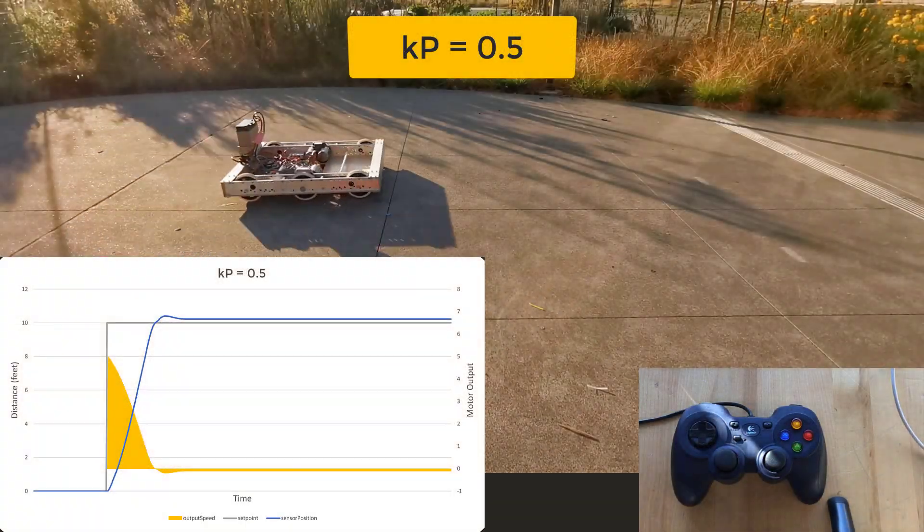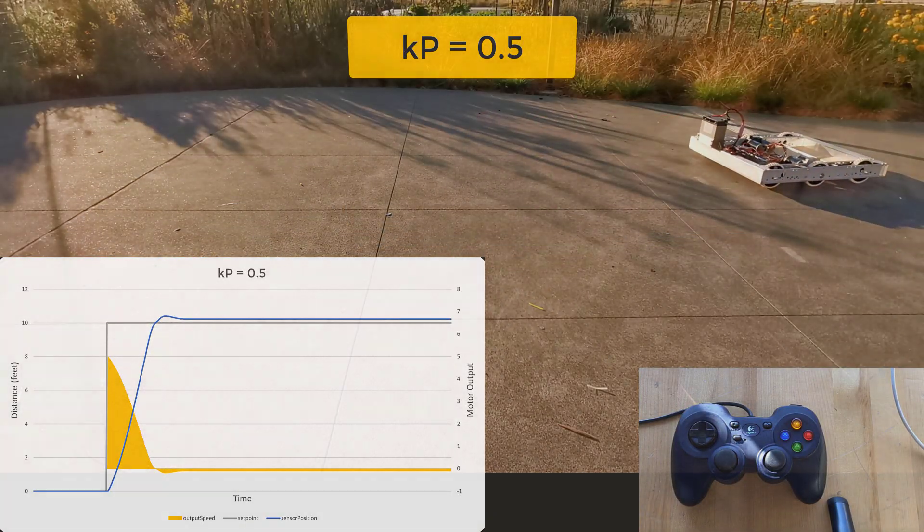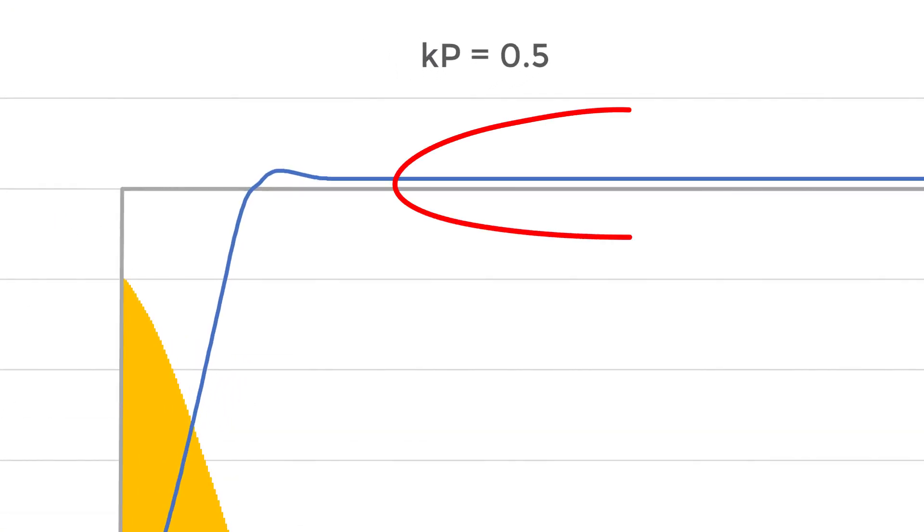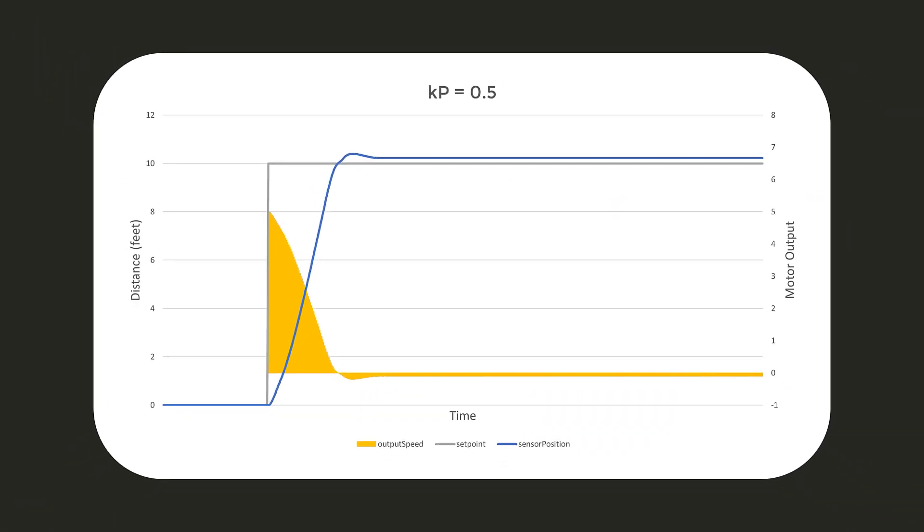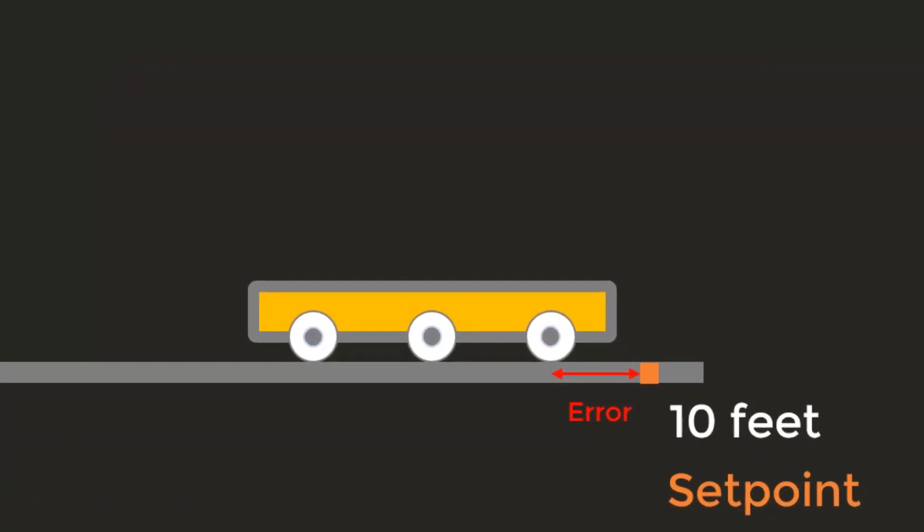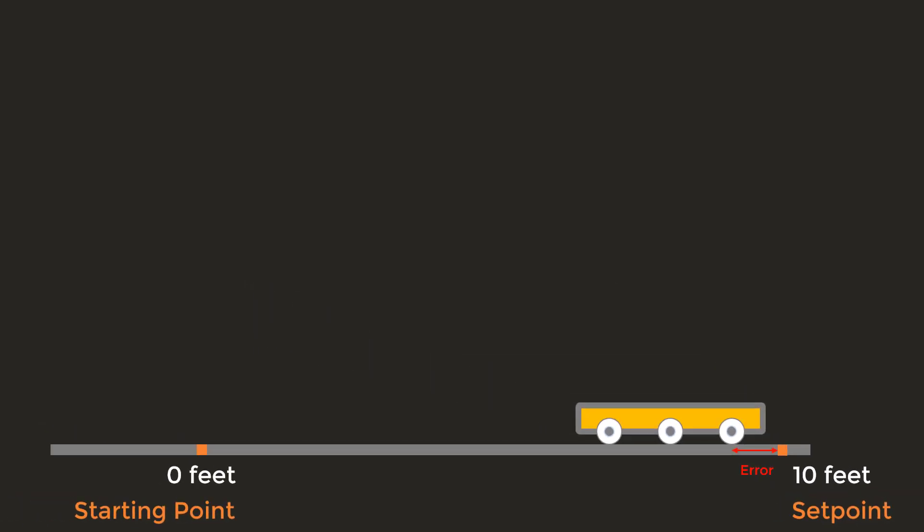In the last video, we found 0.5 to be a good value for Kp, and we left off with the problem of proportional control having a tiny amount of error. In theory, if there's any error, proportional control should continue to adjust the robot's position. However, when the error is tiny, the generated output will be tiny, and it may not even be enough to overcome friction, therefore leaving the robot unmoved.